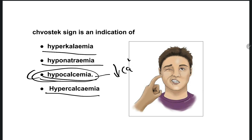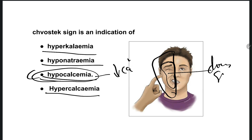For example, if you touch either the right or left side of the face, we can see these kinds of features. This is called Chvostek sign positive.